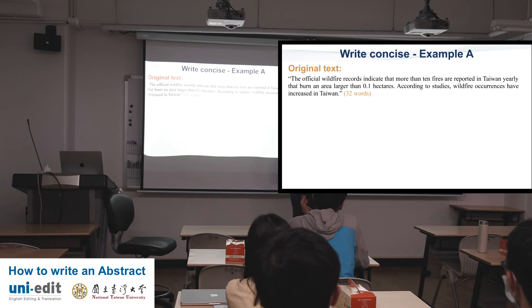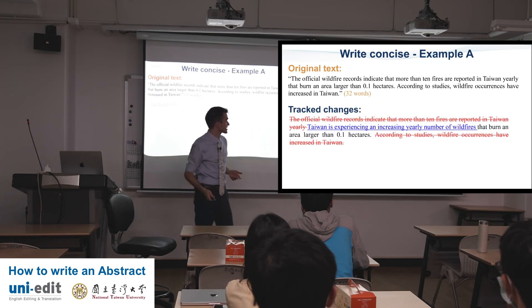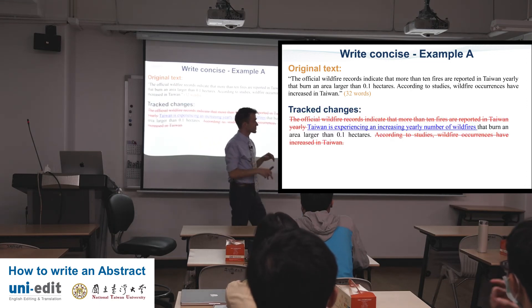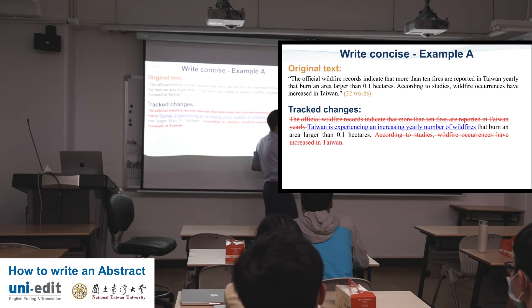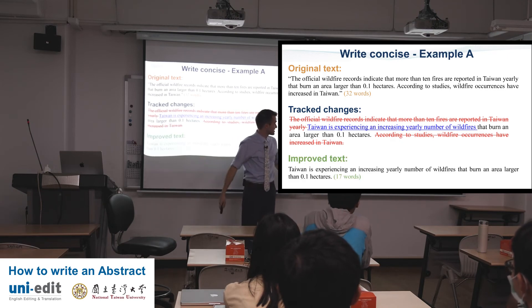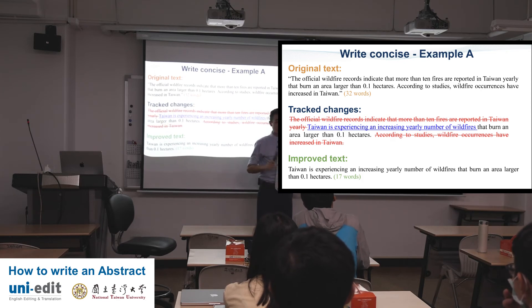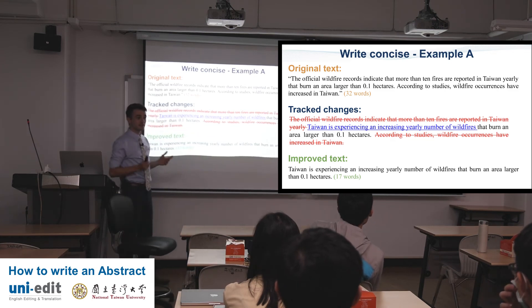Can we combine the two sentences into one? What's the most important word in sentence two? 'Increased.' If you take 'increased' and put it into sentence one, you can delete sentence two completely — it would go: 'An increasing number of fires have been reported in Taiwan.' The tracked changes show: 'Taiwan is experiencing an increasing yearly number of wildfires that burn an area larger than 0.1 hectares' — 17 words compared to 32. And I believe these two sentences say the same thing — the information has not changed.